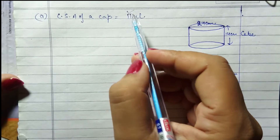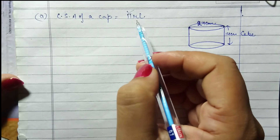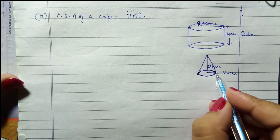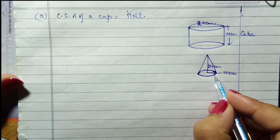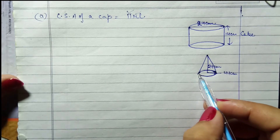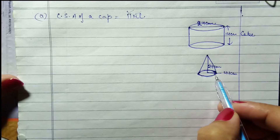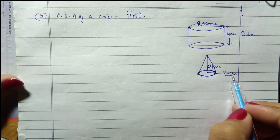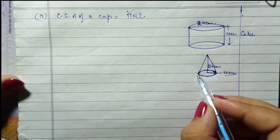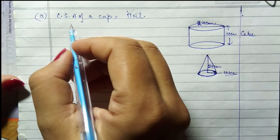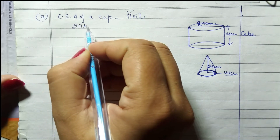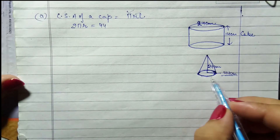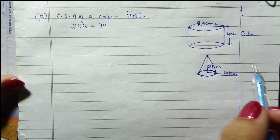Pi ki value hamein malum hai: 22/7. But radius of cap hamare paas nahi di rakhi. Hamein jo circumference di rakhi hai — cap ke bottom mein jo circle hai, iska circumference hamare paas 44 cm diya rakha hai. Circle ke circumference ka formula 2πr equals to 44, kyunki circumference 44 cm hai.